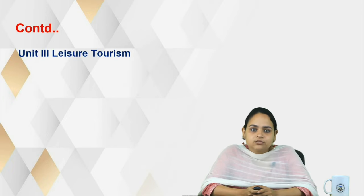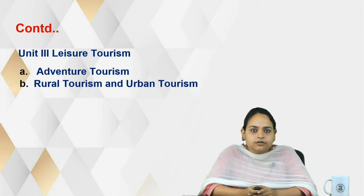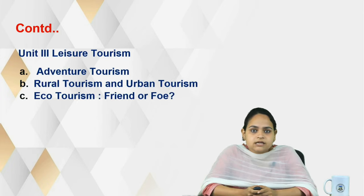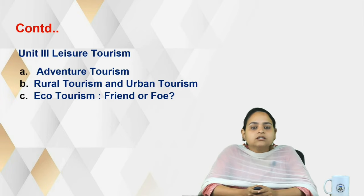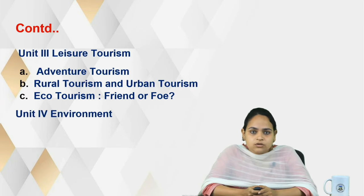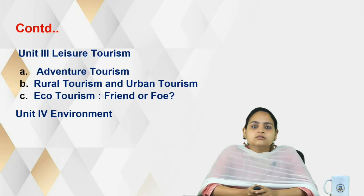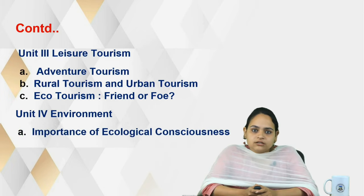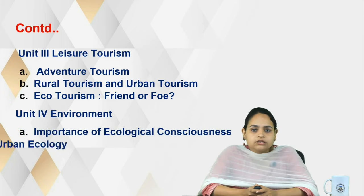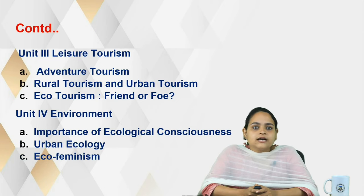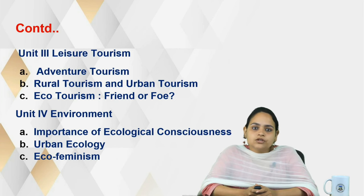The next unit, Unit 3, is titled Leisure Tourism. It includes the concepts of Adventure Tourism, Rural Tourism, and Urban Tourism, and encourages us to think whether Ecotourism is actually a friend or a foe. The last unit, Unit 4, is on Environment, and includes the importance of Ecological Consciousness, Urban Ecology, and Ecofeminism. This is what we will explore in semester 1 and semester 2, four units each.